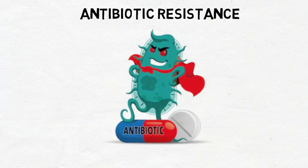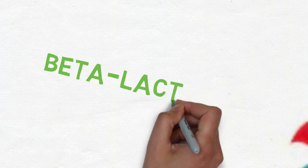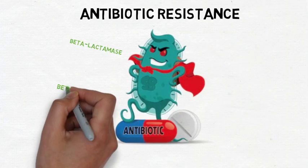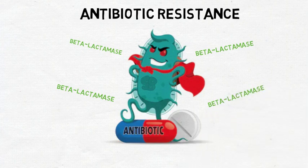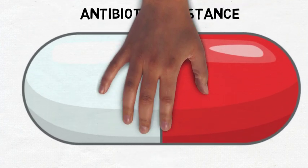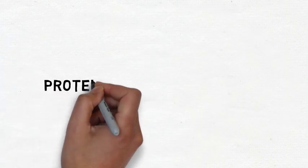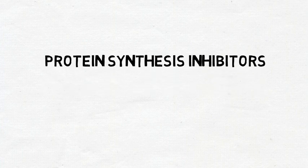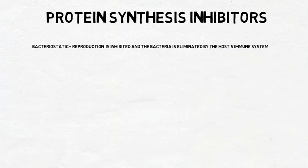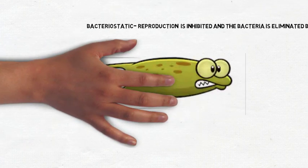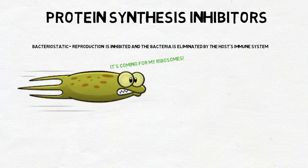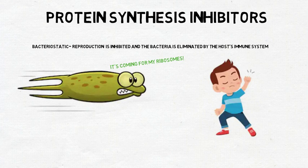The problem is that some bacteria have responded to these drugs and naturally selected for a defense mechanism: antibiotic resistance. Resistant bacteria have manipulated their genetic code to produce a beta-lactamase enzyme, which is secreted to neutralize the antibiotic attack due to its affinity for the beta-lactam ring. Our response is Augmentin, which combats this by combining traditional amoxicillin with clavulanic acid to suppress the effects of beta-lactamase. On the other end of the spectrum, protein synthesis inhibitors are considered bacteriostatic. They target the ribosome, dismantling the metabolic process of the invading microorganism to alter its ability to reproduce and survive, with the host's immune system ultimately eliminating the targeted bacteria.